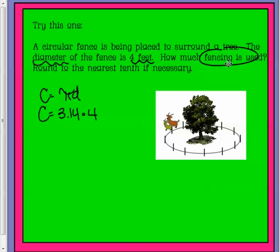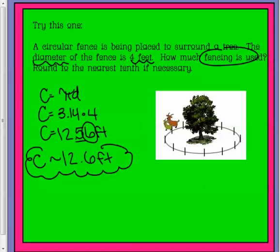Plug in your pi, plug in your four feet for diameter, and we get 12 and 56 hundredths feet. But the six tells the five to become a six, so our circumference is about 12.6 or 12 and 6 tenths feet.